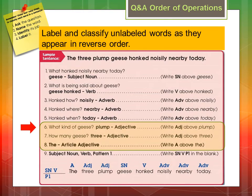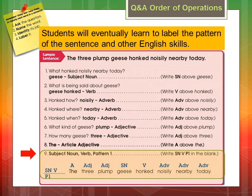Then begin labeling any unlabeled words as they appear in reverse order, using the four-step process, as seen in steps 6 through 8. Finally, students will learn to label the pattern of the sentence and identify other English skills, as demonstrated in step 9.